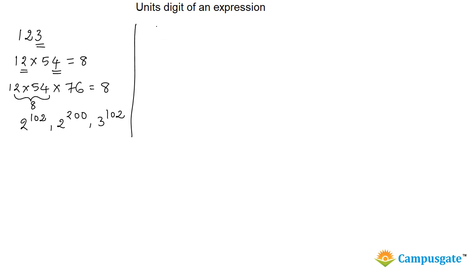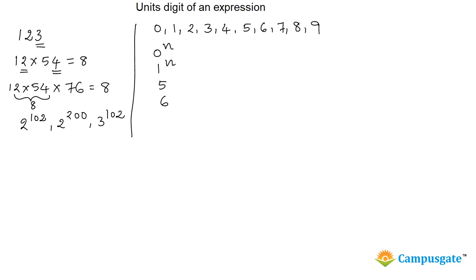So for any number, it should end with digits 0 to 9. For numbers 0, 1, 5, and 6 — whatever power you raise them to — if a number ends with 0, 1, 5, or 6, you will get the same unit's digit: 0, 1, 5, and 6 respectively.